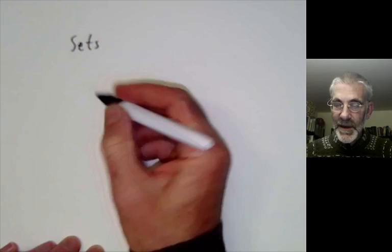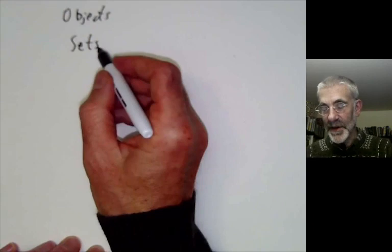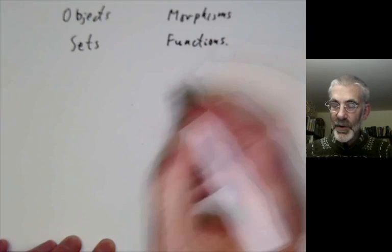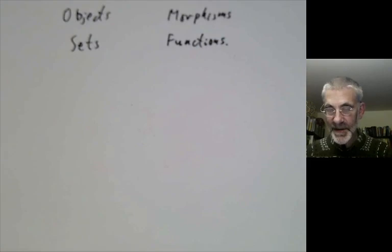A category has things called objects and things called morphisms. For the category of sets, the objects are going to be sets and the morphisms are going to be functions. You usually name a category after its objects, so the category of sets is the one whose objects are sets.